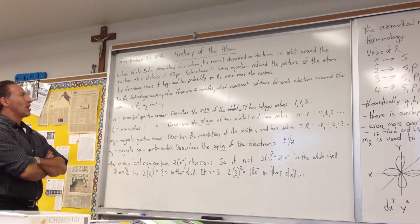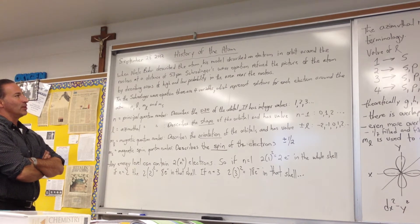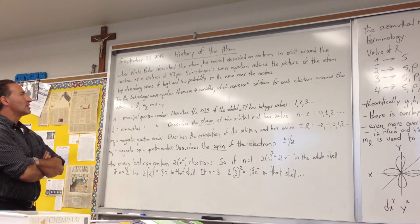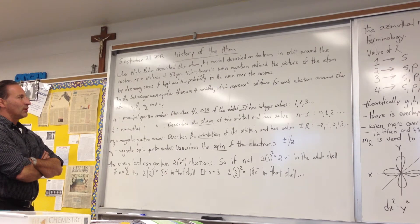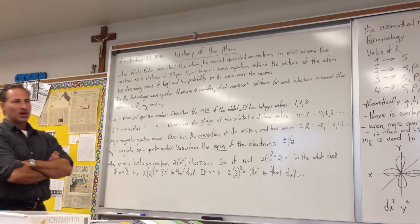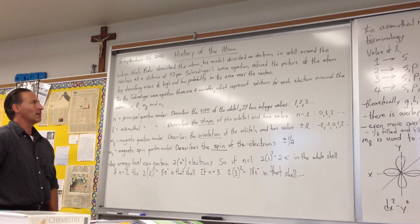When Niels Bohr described the atom, his model described an electron in orbit around the nucleus at a distance of 53 picometers. We saw earlier on that that's not possible based on what we know from classical physics.